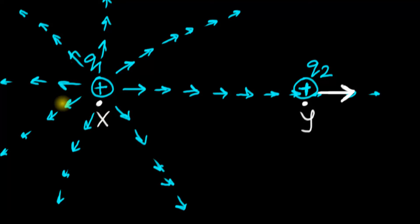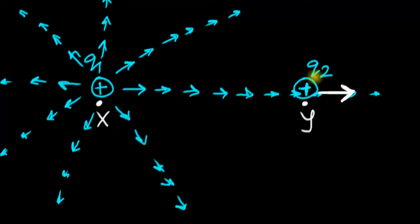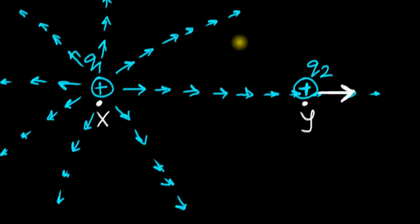Charge Q1 doesn't care whether Q2 exists or not. It's not pushing Q2 directly — it's just telling space what to do, and it's the space that ends up pushing Q2. Q2 would also influence space, but let's assume Q2 is an infinitesimally tiny charge whose influence on space is negligibly small, just for simplicity. So Q1 is a strong charge and Q2 is a tiny test charge.